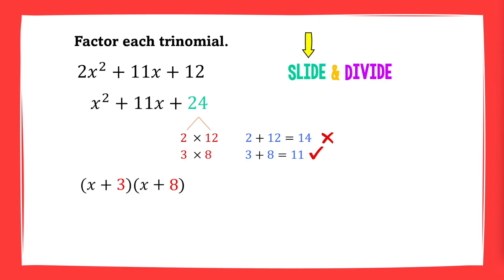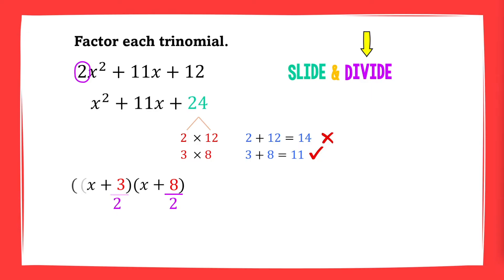Now time to divide. We bring the 2 back and divide each constant by 2. However, 2 cannot divide into 3 evenly, so we put 2 in front of x. And 8 divided by 2 is 4. Therefore, we get 2x plus 3 times x plus 4.